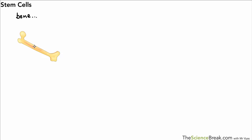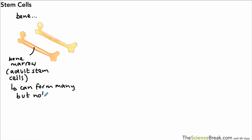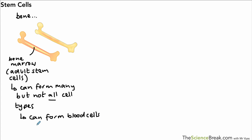There are other sources in the body as well. If we look inside a bone, there's a type of tissue called bone marrow, and that is actually a source of stem cells - we call these adult stem cells. The issue, though, is that while we don't have to use embryos, adult stem cells can form many types of cells but not all types. For example, they can make blood cells and a few other types, but not every cell type in the body.